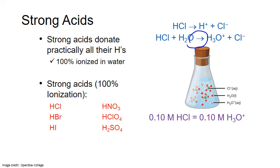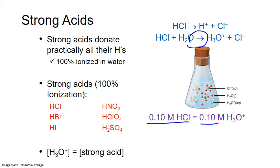The six strong acids are: hydrochloric acid, hydrobromic acid, hydroiodic acid, nitric acid, perchloric acid, and sulfuric acid. With one exception — sulfuric acid — you can assume that the hydronium ion concentration equals the initial concentration of the acid. For example, if we dissolve 0.10 moles per liter of HCl in solution, we can assume it forms 0.10 moles per liter of hydronium ion, and then use that concentration to calculate pH using the pH formula.